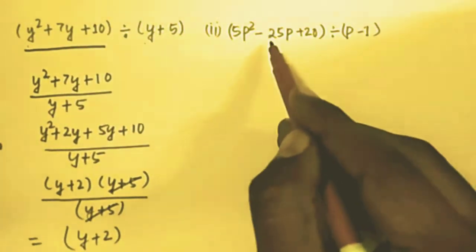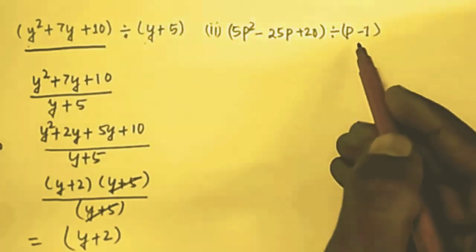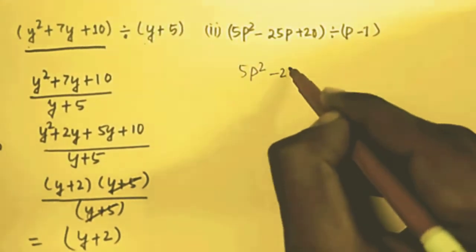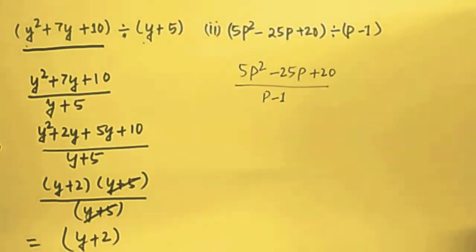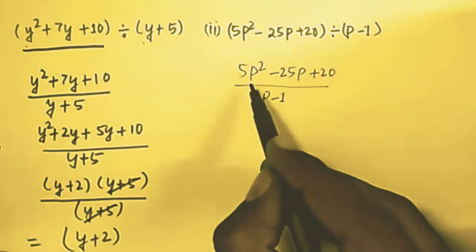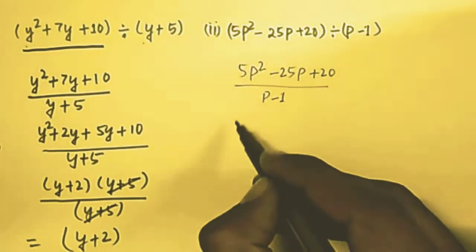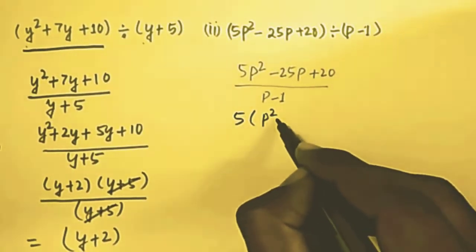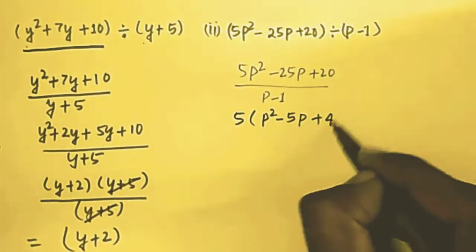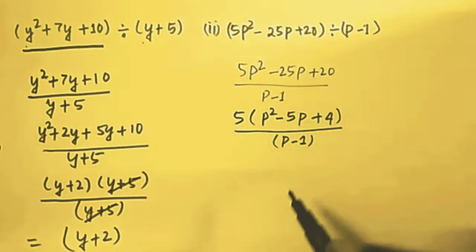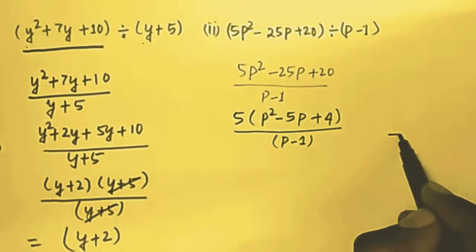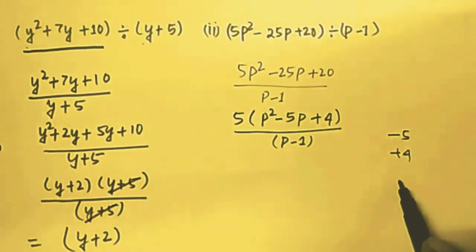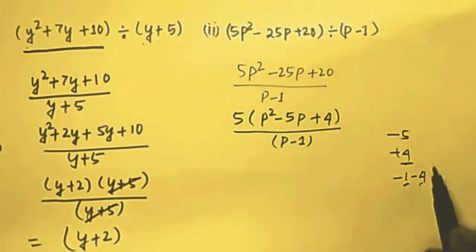The next question is 5p² − 25p + 20 divided by (p − 1). First, 5 is common in all three terms, so take out 5, leaving p² − 5p + 4. Now find two numbers whose sum is −5 and whose product is +4 — those are −1 and −4.